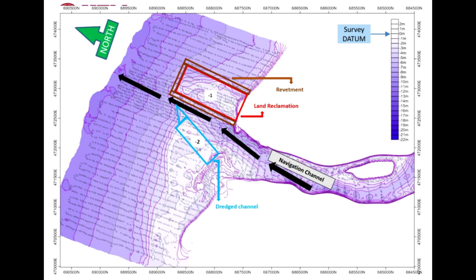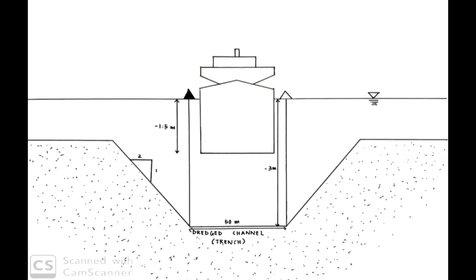With these solutions, no sediment will be deposited at the old location; it will be deposited at a new location where it causes no problem to users. This shows the view of boats or ships passing the navigation channel after dredging and building a revetment.